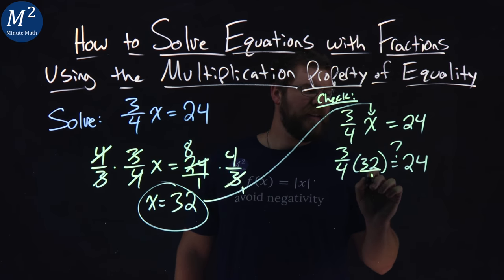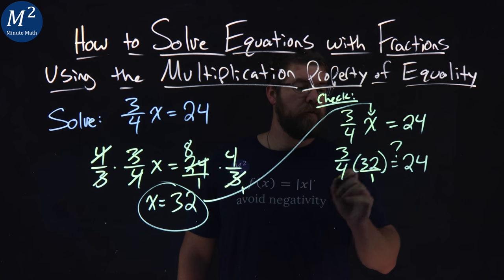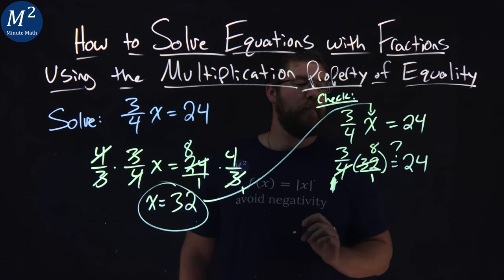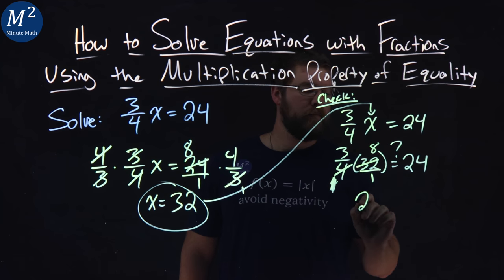Well, remember that's like 32 over 1. 4 goes into 32 8 times, 1 right here, and we have 8 up there. 3 times 8, 24.